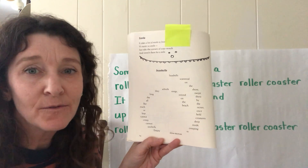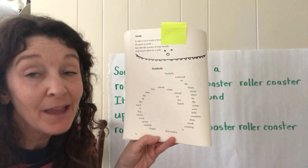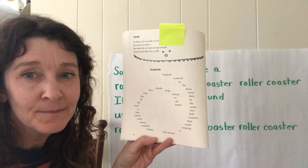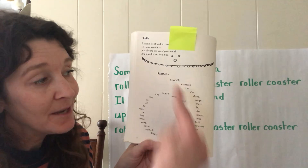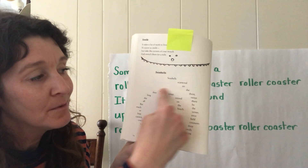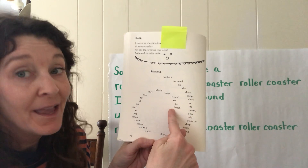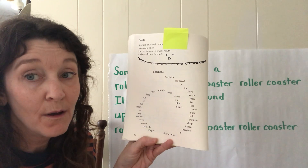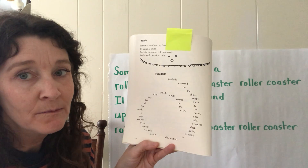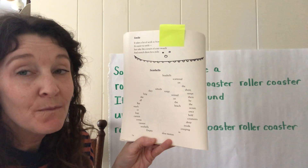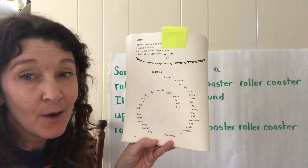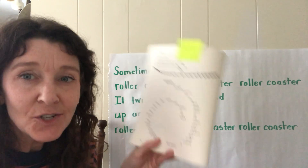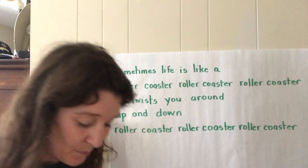Think about how Douglas Florian displayed his poem on the page. He made it a shape, and he put one word per line, which made a difference in how we read it. Let's look at another example.